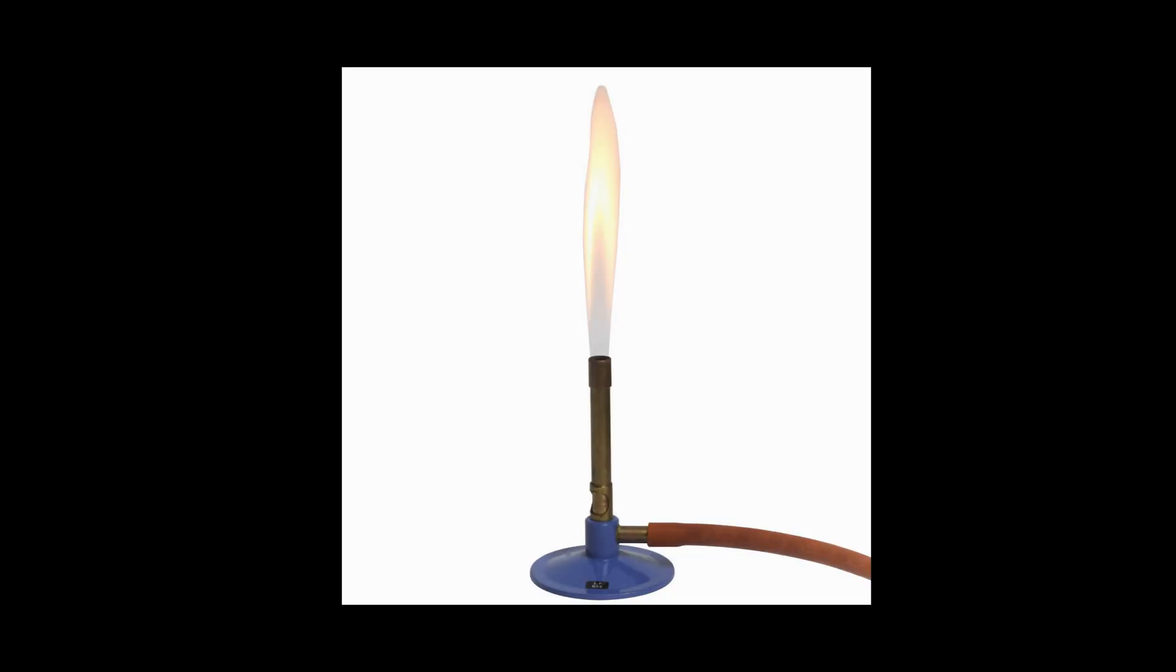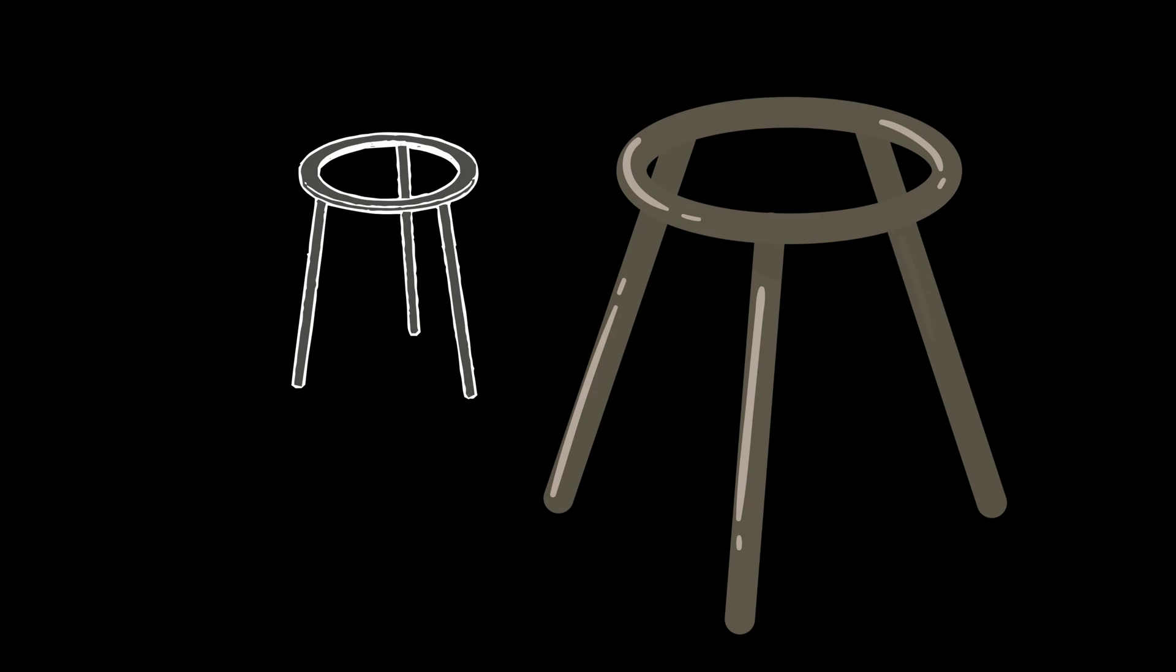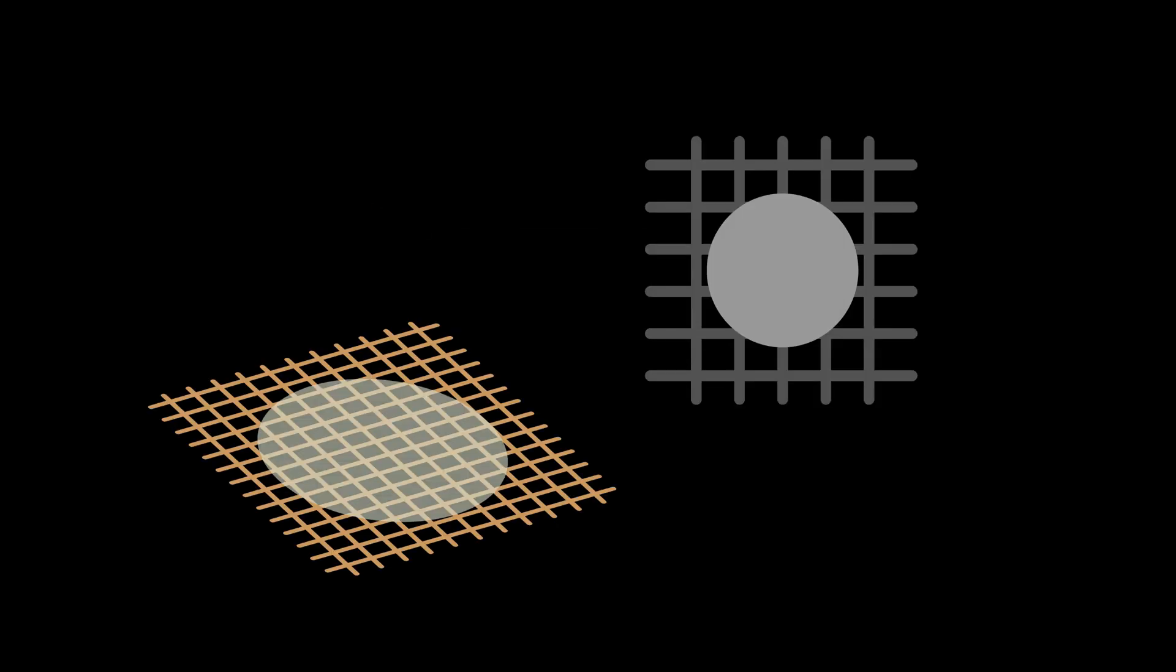Bunsen burners bring the heat, yellow safer, blue complete. Tripods stand tall and still, holding things so they don't spill. Heatproof mats protect the bench from damage caused by heat or mess, wire gauze spreads heat around, so glassware stays safe and sound.